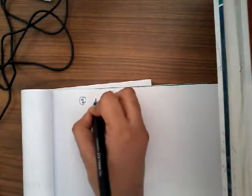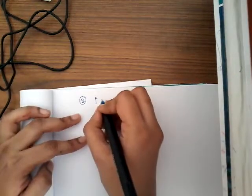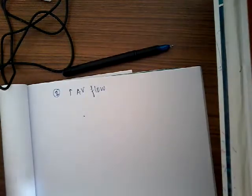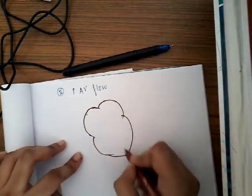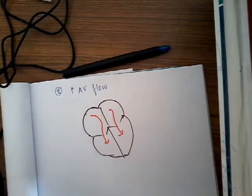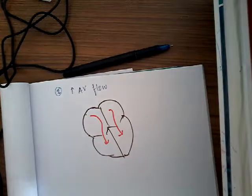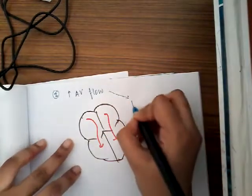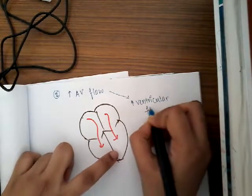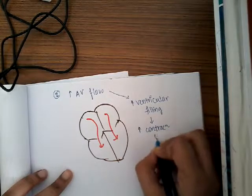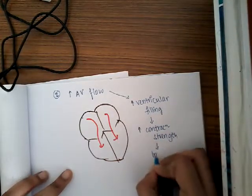The second cause of loud S1 is increased atrioventricular flow. Whenever the blood flow from atria to ventricles is increased, there is increased ventricular filling. Because of this large amount of blood, the strength of ventricular contraction increases, and as a result there is loud S1.